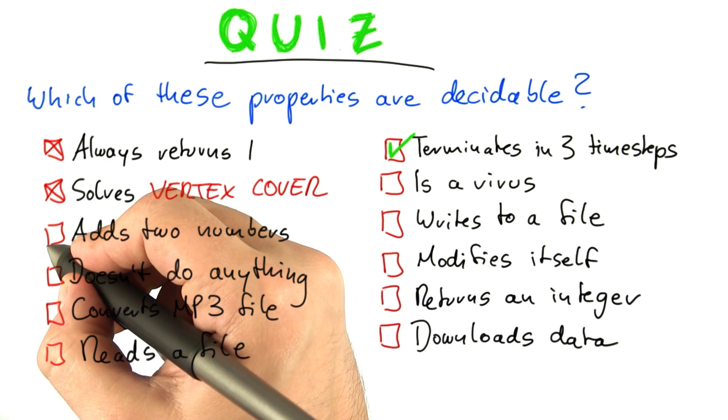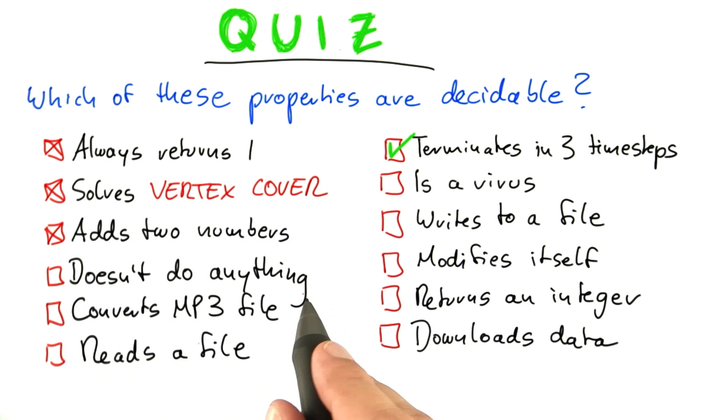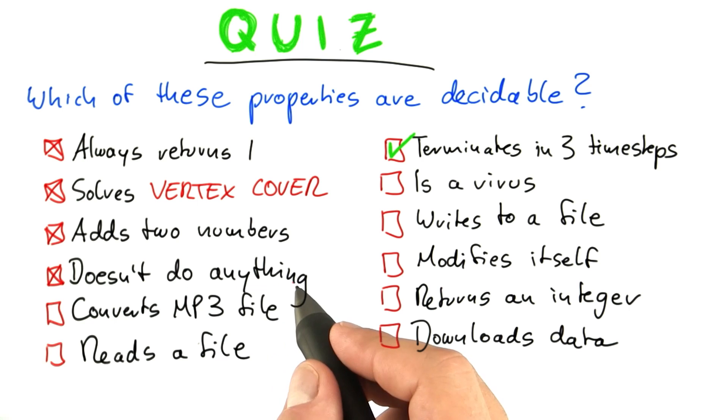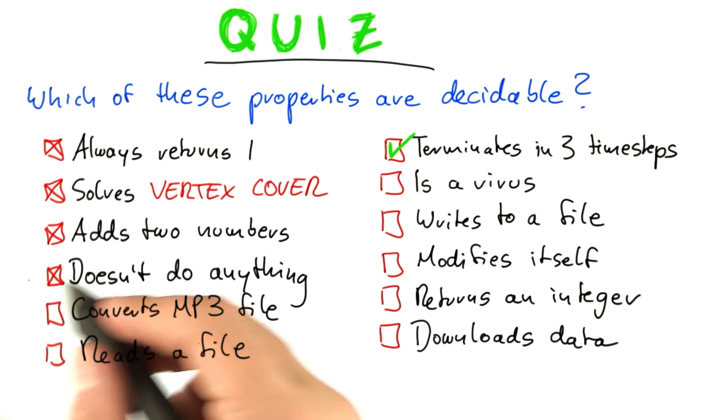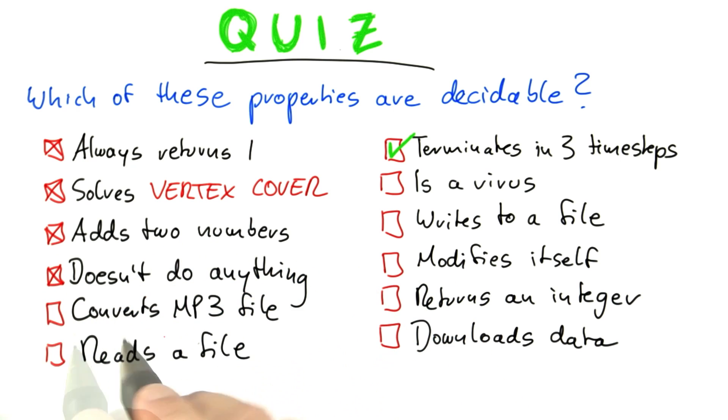'Adding two numbers' — Rice's theorem applies here. No matter how you define it, it will always come back to Rice's theorem.